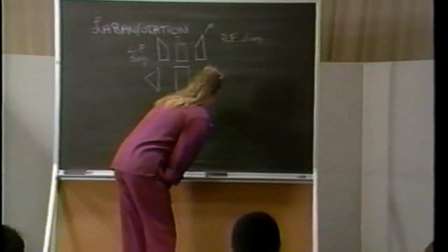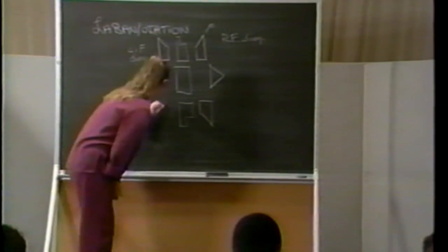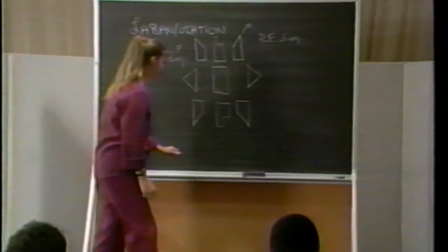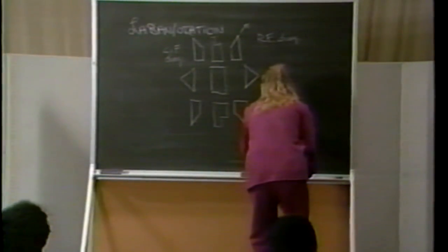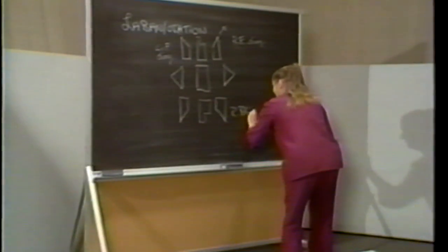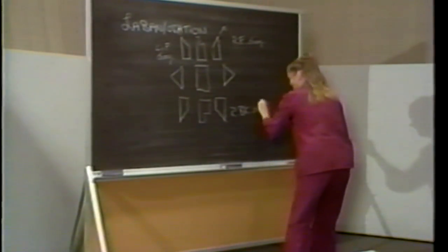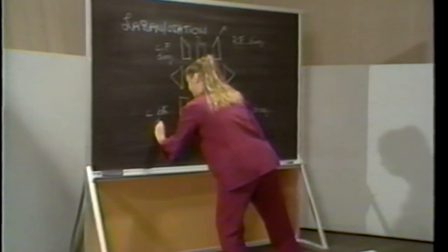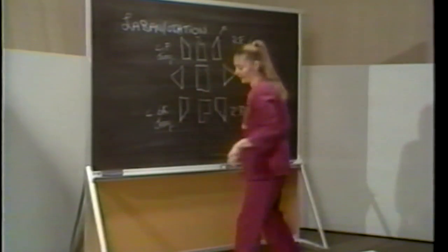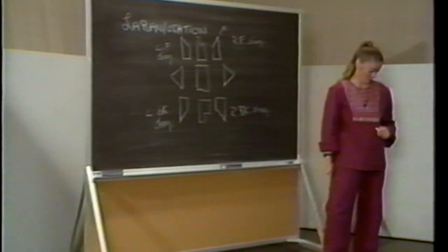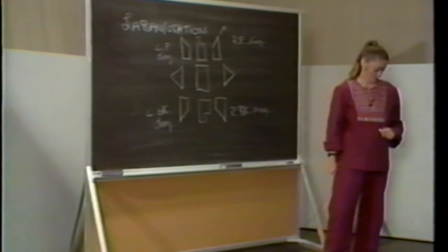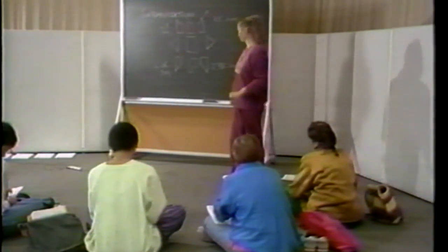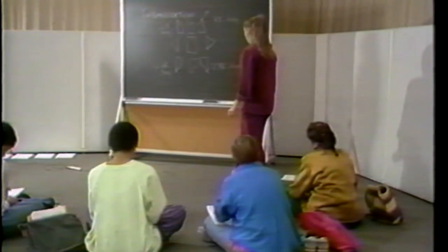The backward diagonal symbols point again toward the diagonals they indicate — right back diagonal and left back diagonal. And that's it for direction symbols.